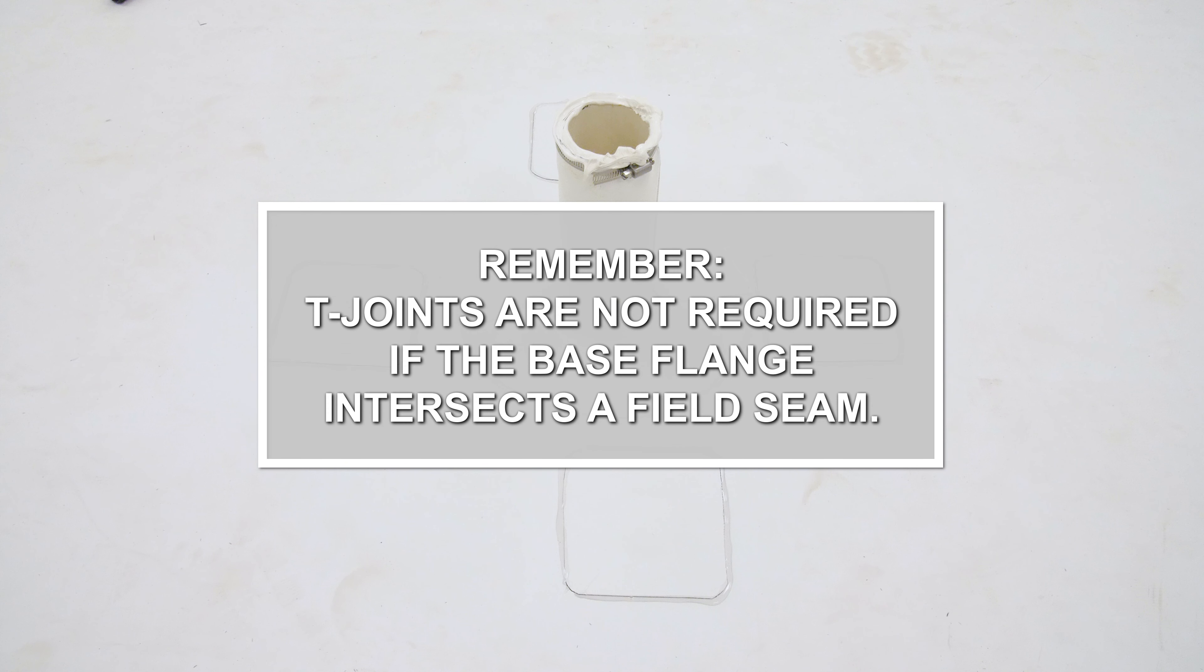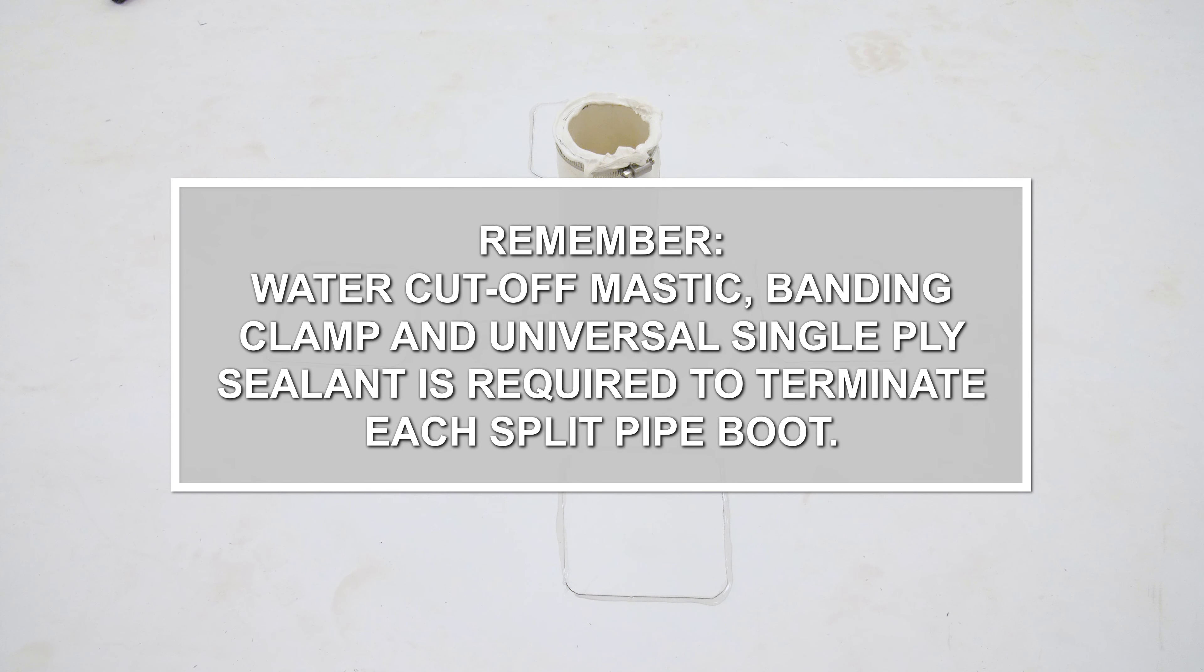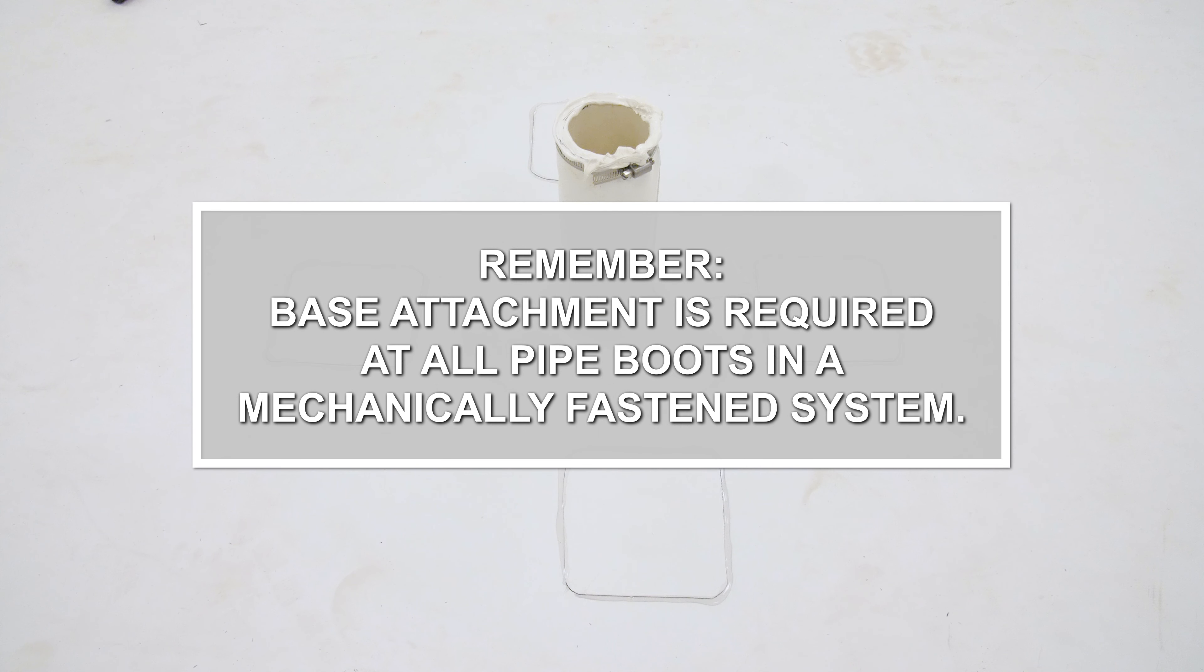T-joints are not required if the base flange intersects a field seam. Water cutoff mastic, banding clamp and universal single-ply sealant is required to terminate each split pipe boot. Base attachment is required at all pipe boots in a mechanically fastened system.